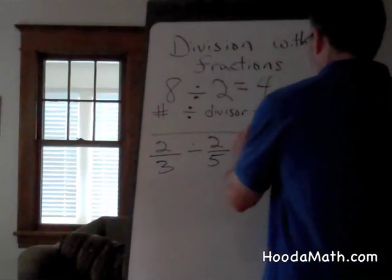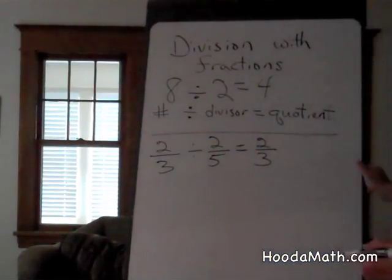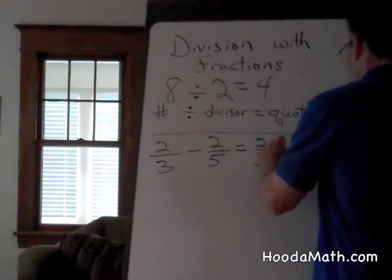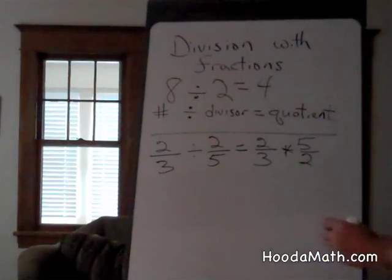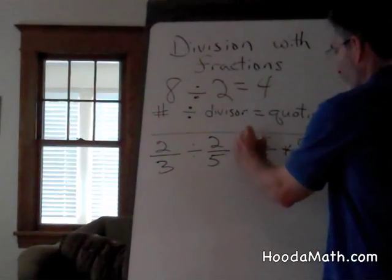Remembering the rules, you multiply the original number 2 thirds by the reciprocal of the divisor, which is 5 over 2. You can simplify by dividing 2 into 2, 2 into 2,